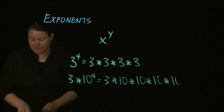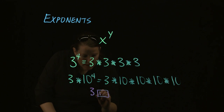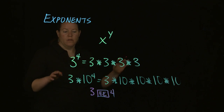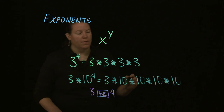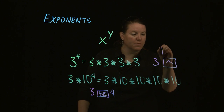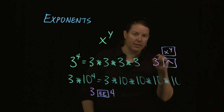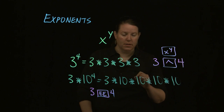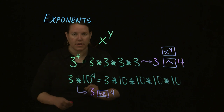Three times three times three times three is different from three times ten to the fourth, which is three times ten times ten times ten — totally different numbers. To enter three times ten to the fourth, hit three, then EE or EXP, then four. To get three to the fourth, find a button that looks like an up caret, or x to the y — that's the power button, and it raises the number to the power of four.